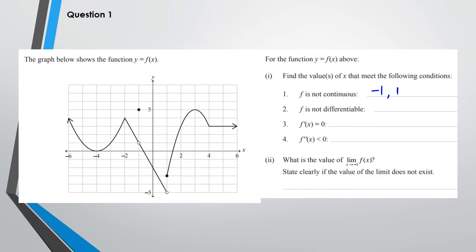The two values where it's not continuous are x = -1 and x = 1. For where f is not differentiable, you're looking at sharp points or holes and jumps. The first point is x = -2 because it's a sharp point. Then x = -1 is not differentiable because it has an empty hole, and x = 1 has another hole. There's also a sharp point at x = 4, so those are the four points.